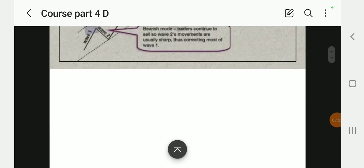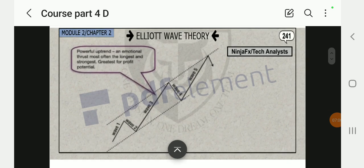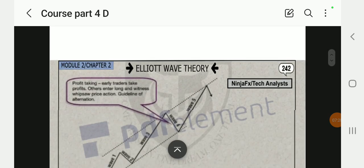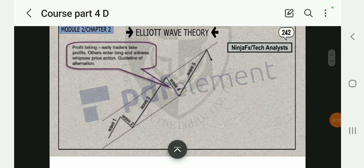Wave three: powerful uptrend and emotional thrust, often the longest and the strongest, greatest for profit potential. As I said, Frank 40 is in the uptrend. We're looking at the uptrend channel, looking at the motive wave to the upside. The PDF is telling you that wave three is going to be great for profit. Profit taking: early traders take profits, others enter long and witness wave four's price action.